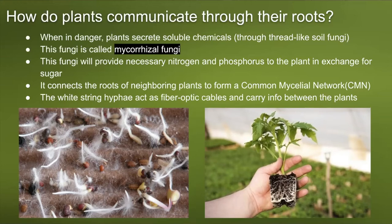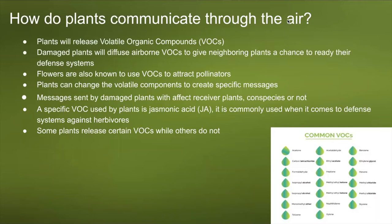Plants will release volatile organic compounds — VOCs — through the air. Damaged plants will diffuse airborne VOCs to give neighboring plants a chance to ready their defense systems. If one plant is damaged by a herbivore or senses a drought, it releases VOCs via air to neighboring plants. Flowers also use VOCs to attract pollinators. Plants can change the volatile components to create specific messages, and those messages will affect receiver plants of the same or different species.